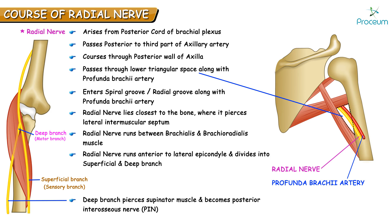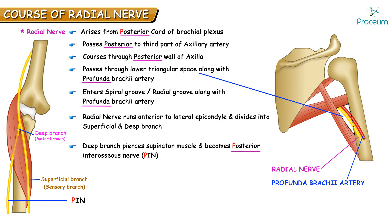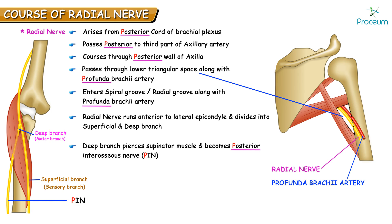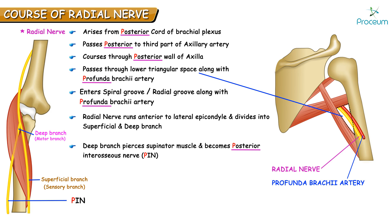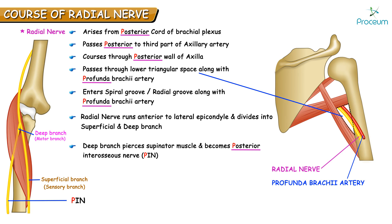To summarize the course: the radial nerve originates from the posterior cord of the brachial plexus, passes posterior to the third part of the axillary artery, courses along the posterior wall of the axilla, passes through the lower triangular space with the profunda brachial artery, and through the radial groove on the posterior aspect of the humerus. It then descends anterior to the lateral epicondyle of the humerus and divides into a sensory branch — the superficial branch of the radial nerve — and a motor branch — the posterior interosseous nerve, or deep branch of the radial nerve.